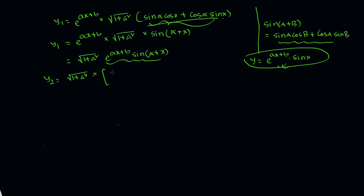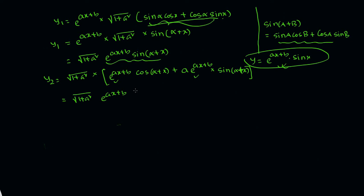For y2, we differentiate y1 = (1+a²)^(1/2) · e^(ax+b) · sin(α+x) using the product rule. This gives: (1+a²)^(1/2) times [e^(ax+b)·cos(α+x) + a·e^(ax+b)·sin(α+x)]. Taking e^(ax+b) as common: (1+a²)^(1/2) · e^(ax+b) · [cos(α+x) + a·sin(α+x)].